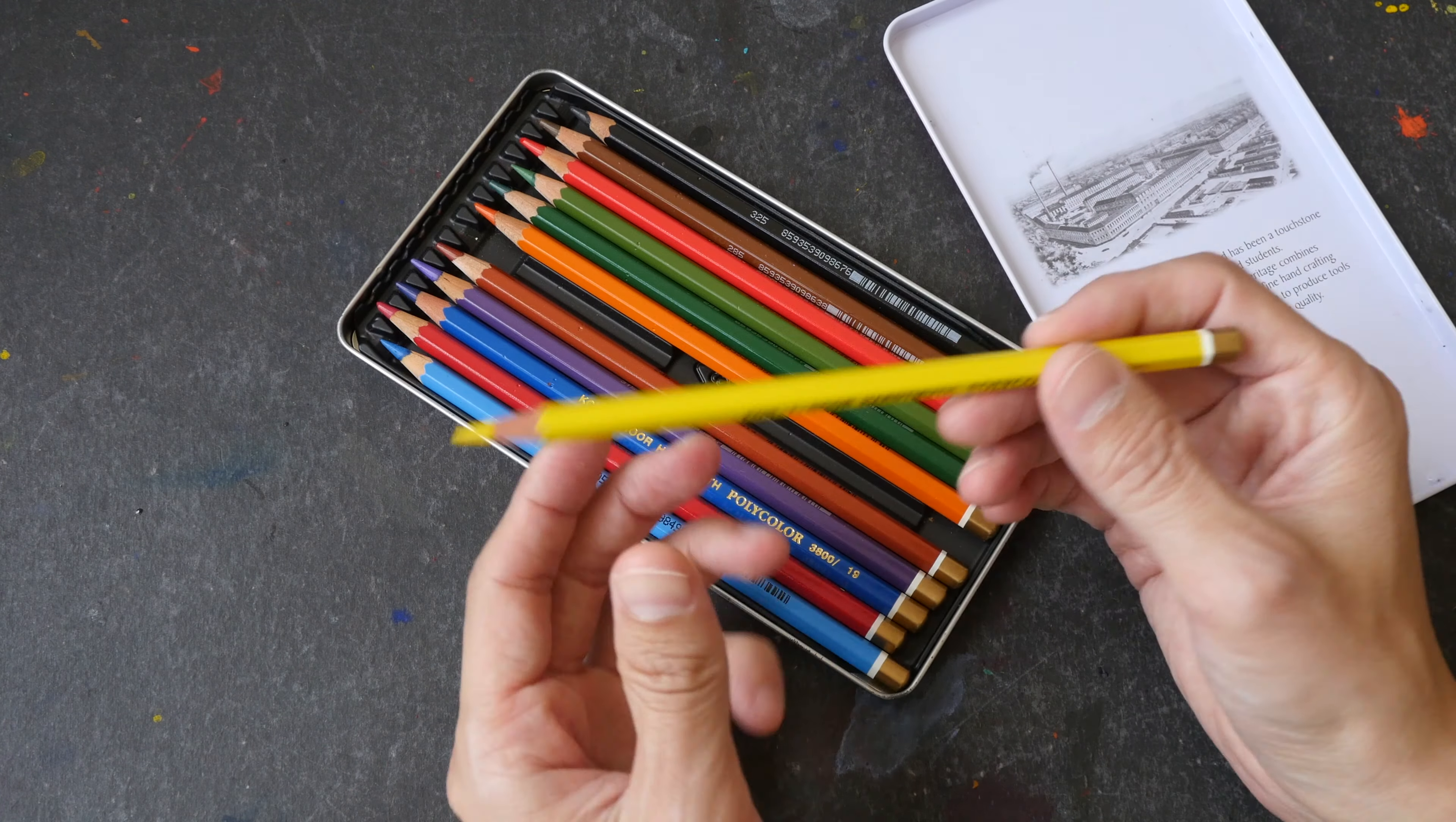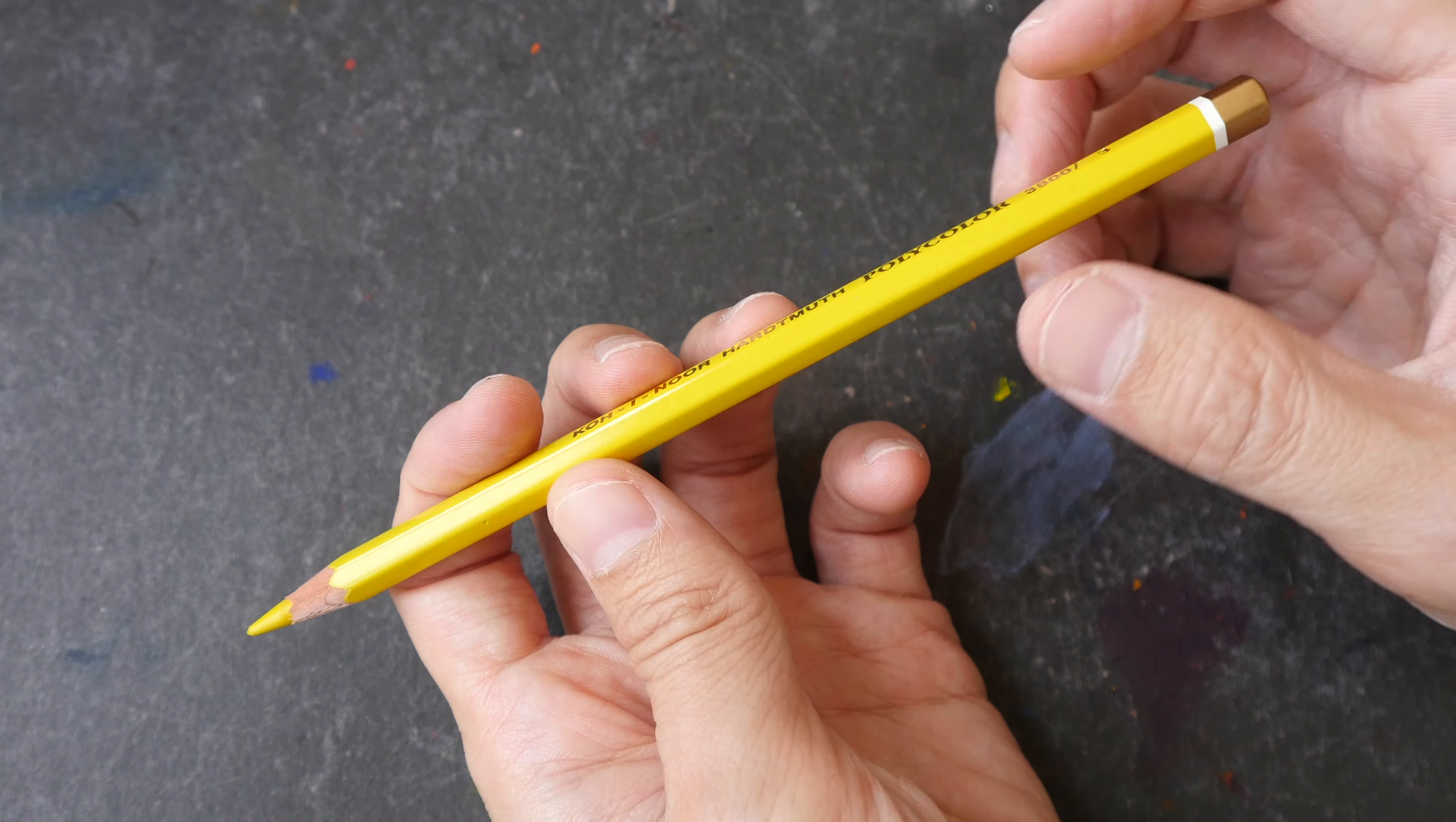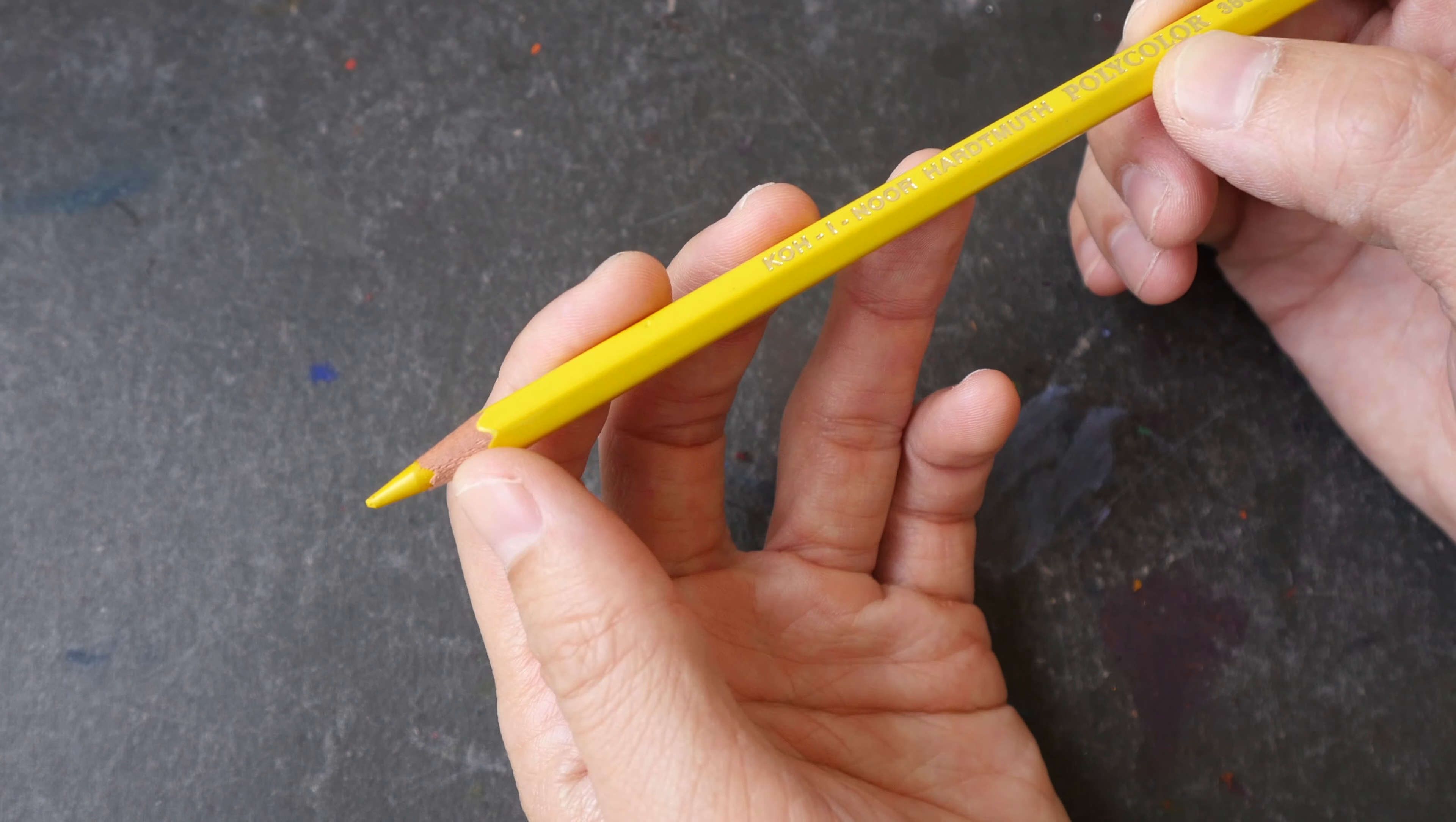Let's take a look at the pencil. The pencil is hexagonal in design. The thickness is similar to a typical wooden pencil. The wood is cedar wood.